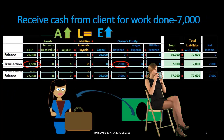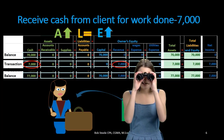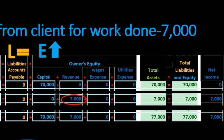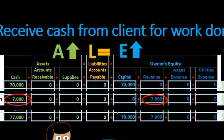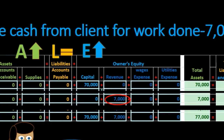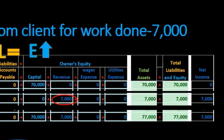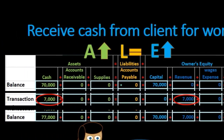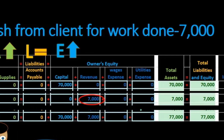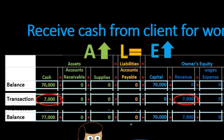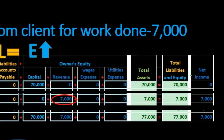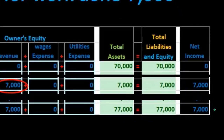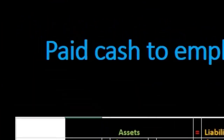We need to show the ending balance. Cash started at $70,000, we received $7,000 more, so we're now at $77,000 in cash. The capital account stays at $70,000. Revenue increased by $7,000. Total assets of $77,000 equal total liabilities and equity of $70,000 plus $7,000, confirming the equation remains in balance. Net income at this point is $7,000.